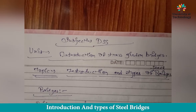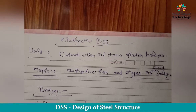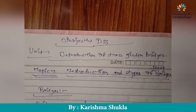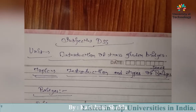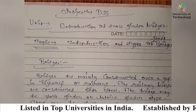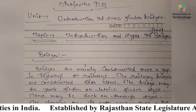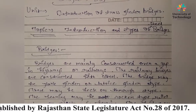Hello and good morning to you all. This is Karishma Shukla. Today we are going to learn in our subject DSS, and our unit is Introduction of Truss Girder, and our topic is Introduction and Types of Steel Bridges. First, we have to understand bridges, so we are going to learn about steel bridges.